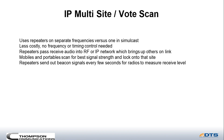This uses repeaters at different sites on different frequency pairs. Audio from the receiver is sent to the other sites by an RF or IP network. Repeaters transmit the audio either from the local receiver or the network. Mobiles scan for the strongest signal as they move through the coverage area, and radios change channels as needed without user input. Usually cheaper than simulcast but uses more frequencies.